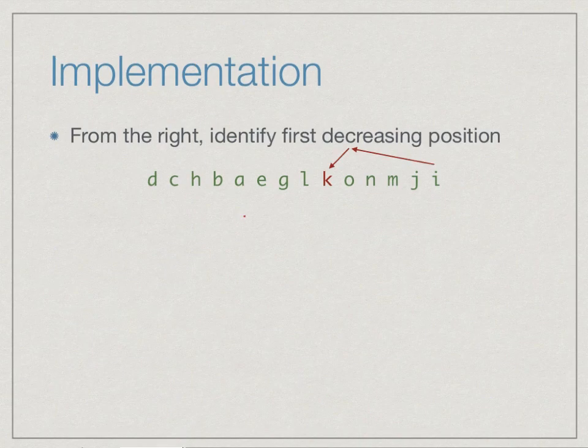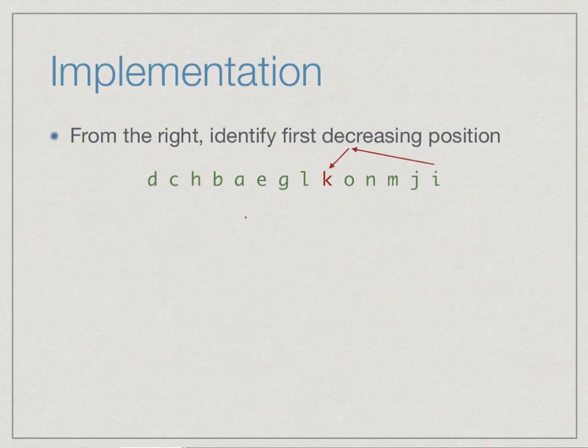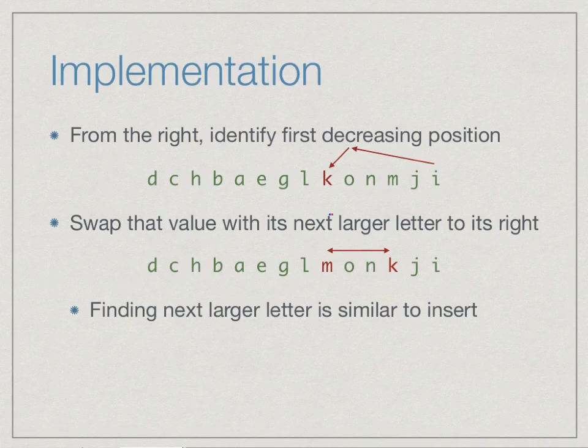Algorithmically, we can do it as follows. First, identify the suffix that can be incremented. We begin by looking for the suffix that cannot be incremented, namely we go backwards so long as it's in descending order. I is smaller than j, j is smaller than m, m is smaller than n, n is smaller than o, but o is bigger than k. That means that up to here we have a suffix that cannot be incremented, and this is the first position where we can make an increment.